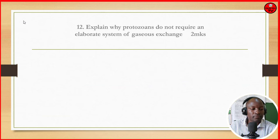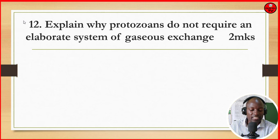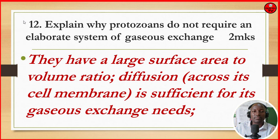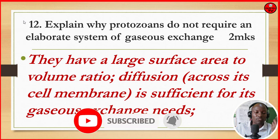Explain why protozoans do not require an elaborate system of gaseous exchange. They have a large surface area to volume ratio, and therefore the majority of gaseous exchange is through direct diffusion. Gases move in and out directly. Most of these organisms are also found in aquatic areas, where there are dissolved respiratory gases, so oxygen moves in and carbon dioxide moves out by simple diffusion.